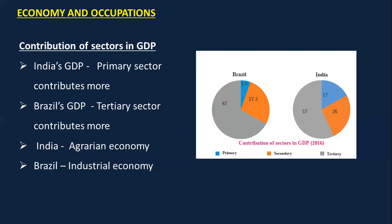Next is Chapter 8 — Economy and Occupations. We'll first talk about the contribution of various sectors to GDP. There are three sectors: primary, secondary, and tertiary. For India's GDP, the primary sector contributes 17%, while in Brazil only 5.5% is contributed by the primary sector. The tertiary sector contributes 67% to Brazil's GDP and 57% to India's GDP. From the pie chart we can conclude that India is an agrarian economy whereas Brazil is an industrial economy.